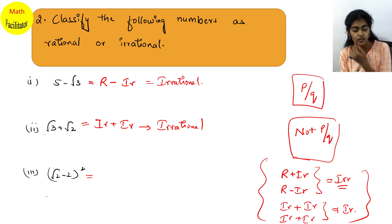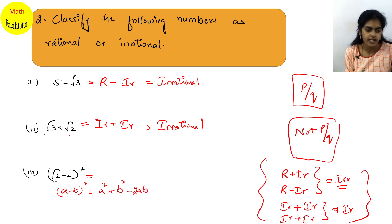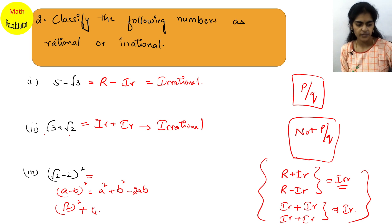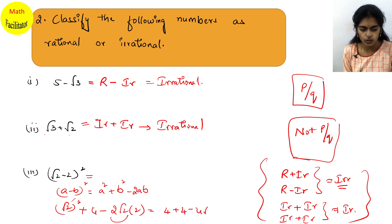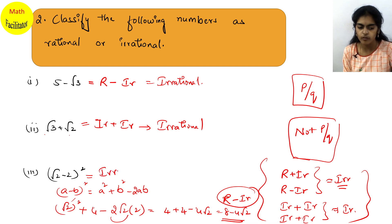Next: (√2 - 2)². This is (a-b)² = a² - 2ab + b². So (√2)² - 2·√2·2 + 2² = 2 + 4 - 4√2 = 6 - 4√2. Here 6 is rational and 4√2 is irrational. Rational minus irrational gives an irrational number.